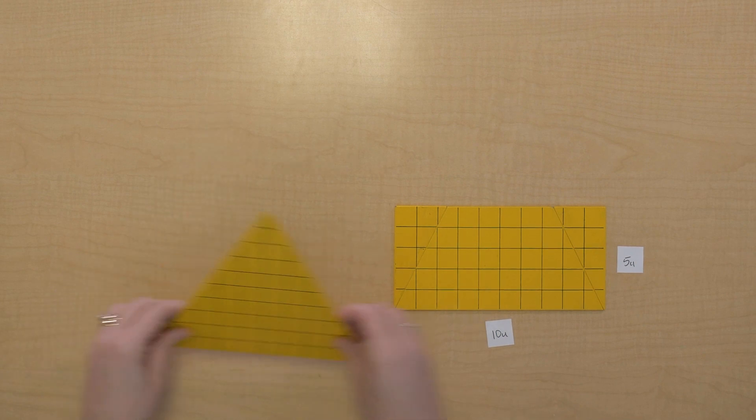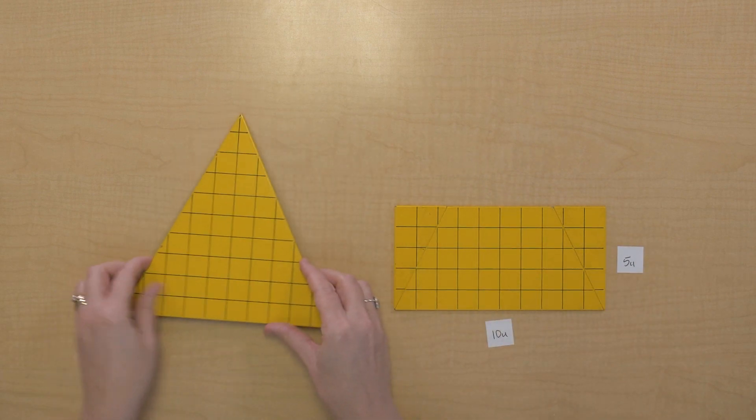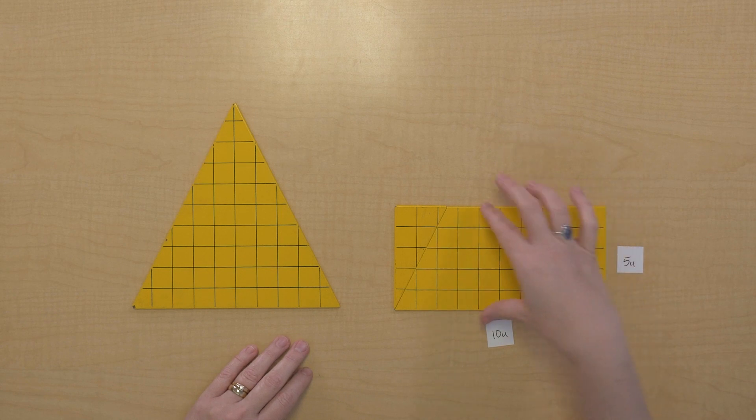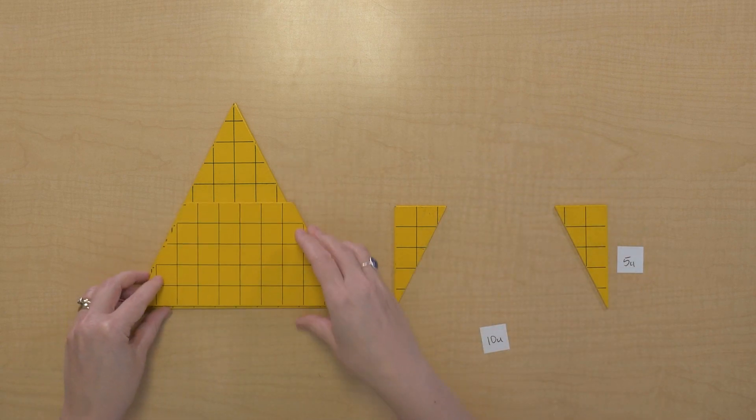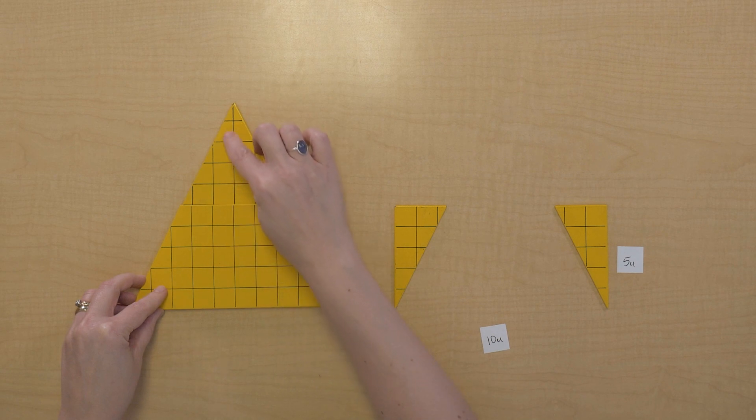Yeah, the bases are the same, but the heights definitely are not. What happened here? Let's take a look. We have a height of 1, 2, 3, 4, 5, 6, 7, 8, 9, 10.